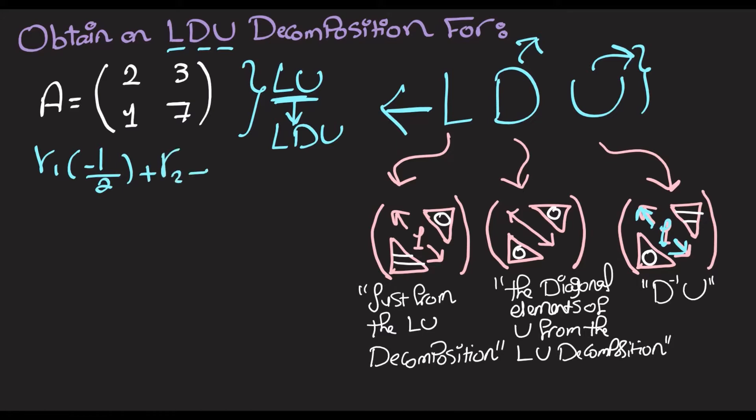So A becomes 2, 3, 0, and 5.5, and at this point it's in reduced echelon form. So we can just call this U.